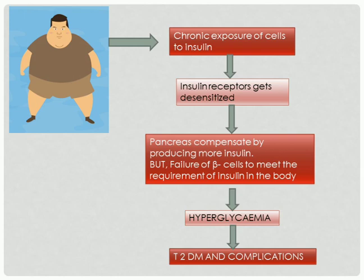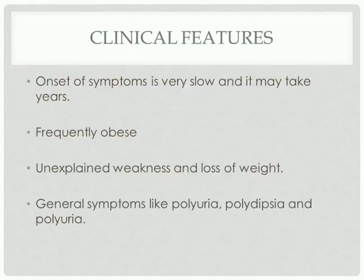What are the clinical features? They are mainly similar to those of type 1 diabetes mellitus: polyuria, polydipsia, and polyphagia. Unexplained weakness and loss of weight, and also frequently the patient will be obese. People with type 2 diabetes mellitus will be obese.